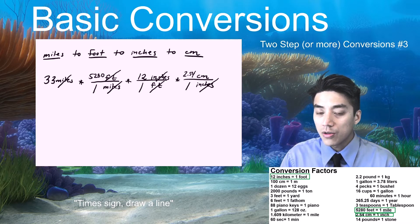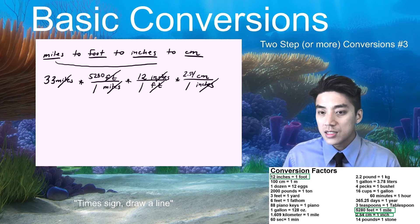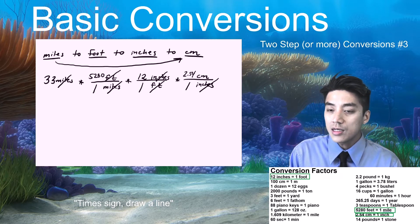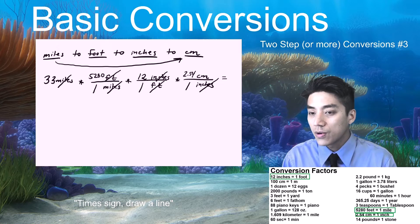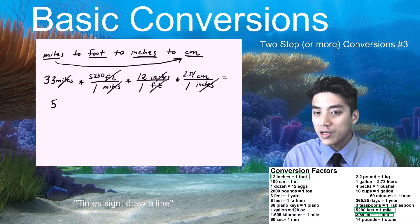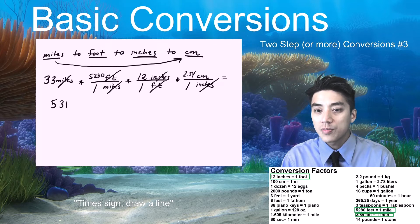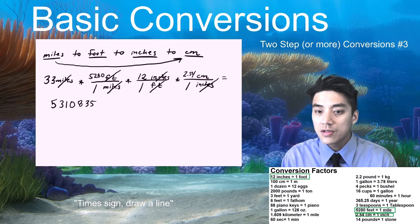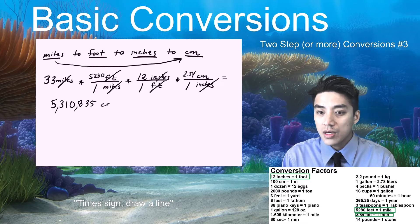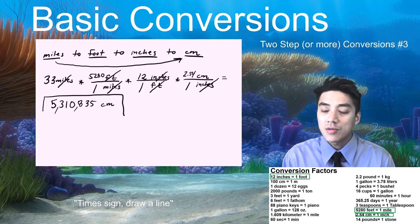And now I just fill in the numbers correctly. Okay, I know that one inch is roughly 2.54 centimeters. And now inches will cancel out. Okay, so now I'm going to go 33 times 5,280 times 12 times 2.54. I followed my plan. I've gone from miles to centimeters. And now the answer is the number that's given. 5,310,835 centimeters.